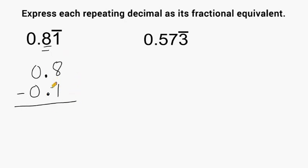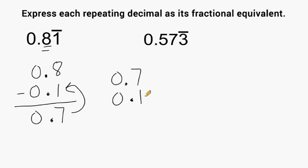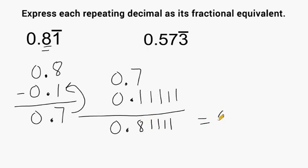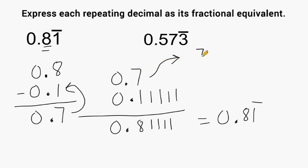Now if we subtract these together we get 0.7. Think about that — if we took 0.7 and added to it zero point repeating one over and over, that would give us 0.8 and then repeating one, which can be expressed as 0.8 with a line over the one. So now we've separated this into two decimal equivalents: 0.7 and zero point repeating one. We have to take both values and express them as their fractional equivalents. Because seven is in the tenths place, we write that as seven-tenths.